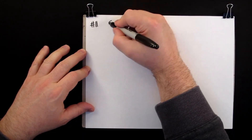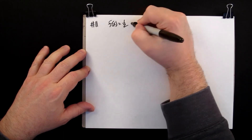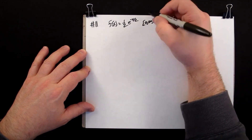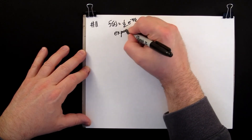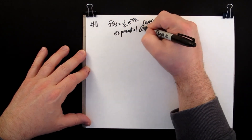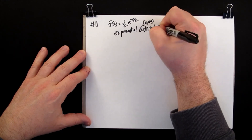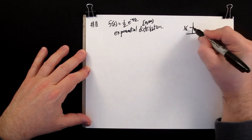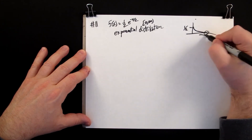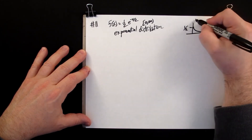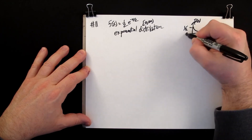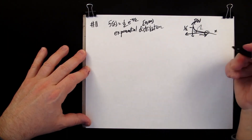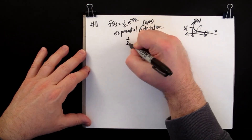We're given a probability distribution on zero to infinity, so this is an exponential distribution. A graph of this starts at one-half and tails off to zero. The total area under the curve is one, because it is a probability distribution.